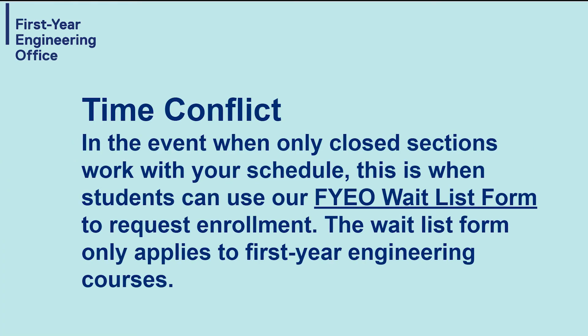Time conflicts: To find classes that will work with your schedule, use the Search for Classes button through My Service Hub. Be sure to uncheck the Show Open Classes Only button, so that you can see all options — open and closed sections. In the event when only closed sections work with your schedule, this is when students can use our waitlist form to request enrollment.